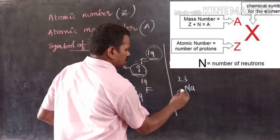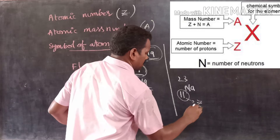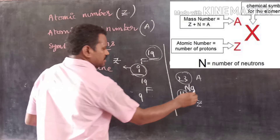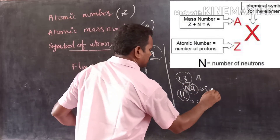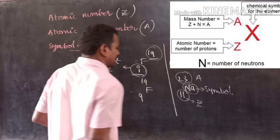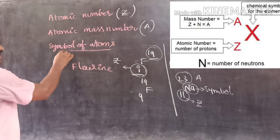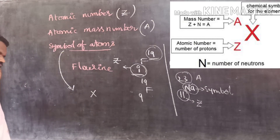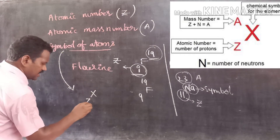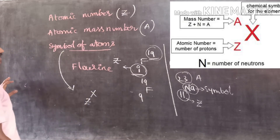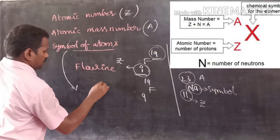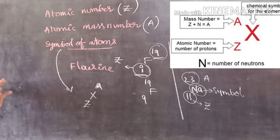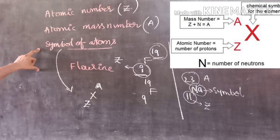Here, the subscript level is nothing but atomic number Z, and the superscript is the atomic mass number A. Na is the symbol of the atom or element. In the general representation, if X is the element, Z is its atomic number (subscript) and A is the atomic mass (superscript). This is the general representation of the symbol of atoms.